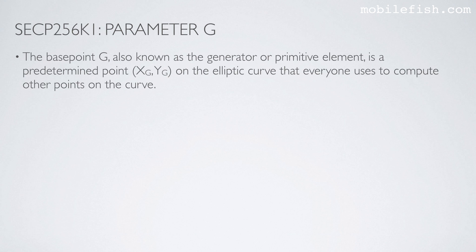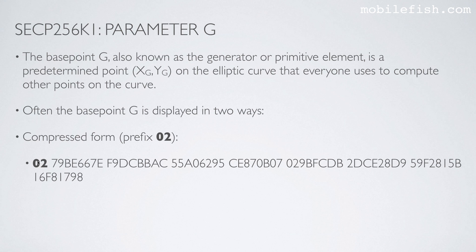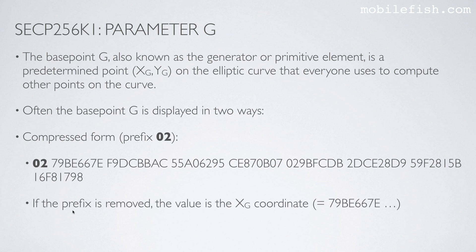The base point G, also known as the generator or primitive element, is a predetermined point on the elliptic curve that everyone uses to compute other points on the curve. Often the base point G is displayed in two ways. In compressed form with the prefix 0x02 — if you remove the prefix, the remaining value is the X coordinate.